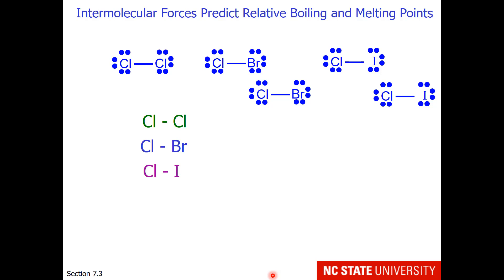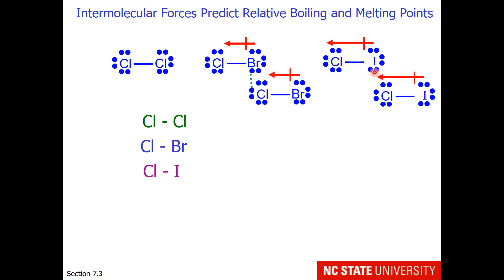Here's another example for you of predicting relative boiling and melting points. We are comparing a chlorine molecule, a molecule composed of chlorine and bromine, and a molecule composed of chlorine and iodine. The chlorine molecule is nonpolar, so that only has dispersion forces. Chlorine and bromine will have slightly different electronegativities, with slight bond dipoles, so there will be a little bit of an attraction between molecules.